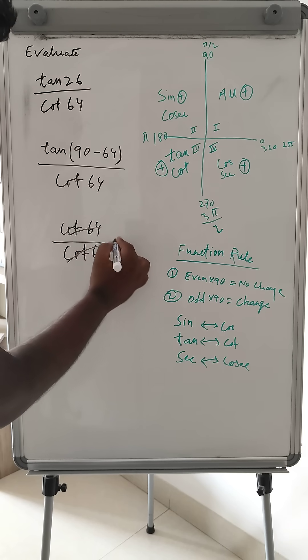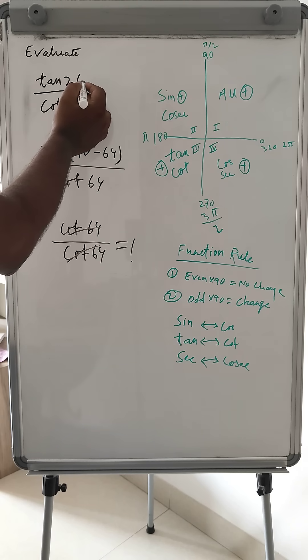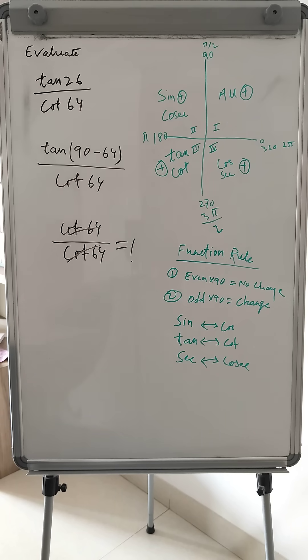The denominator is also 64, so this gets cancelled. The answer is 1. So 1 is the value of tan 26 divided by cot 64.